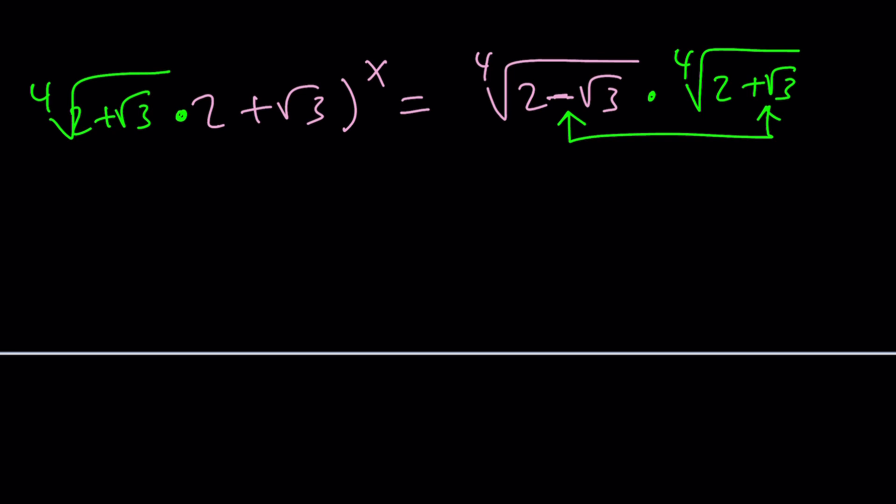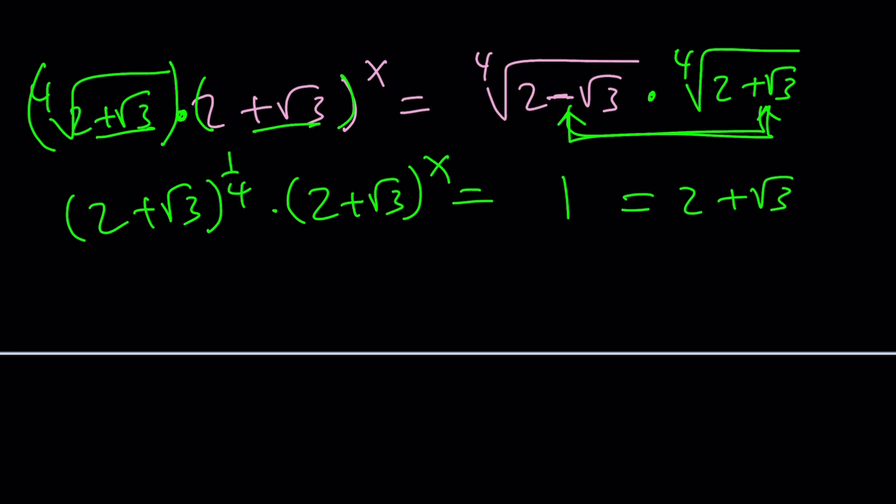So, I'm going to multiply here as well. And that should give me something good because we will have the same basis. I probably should use parentheses here. Something like that. So, now we have the same thing, but this is (2 plus root 3) to the power one-fourth times (2 plus root 3) to the power x. And this is equal to 1 because this is 1. And that is basically (2 plus root 3) to the power zero. Because any number to the power zero is 1.